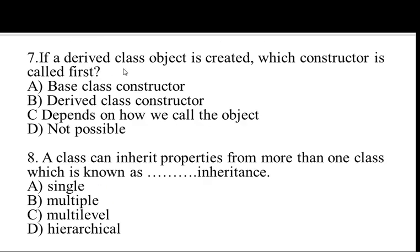Next question. If a derived class object is created, which constructor is called first? Options are: A. Base class constructor, B. Derived class constructor, C. Depends on how we call the object, D. Not possible. The answer is A, base class constructor, because the base class constructor executes first and then the derived class constructor will execute.